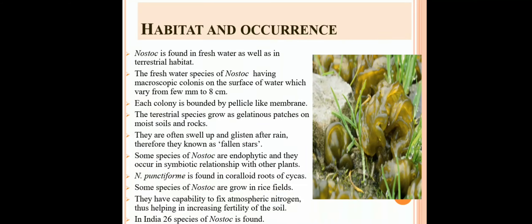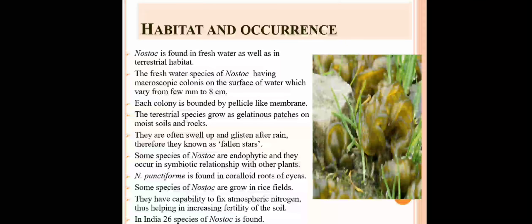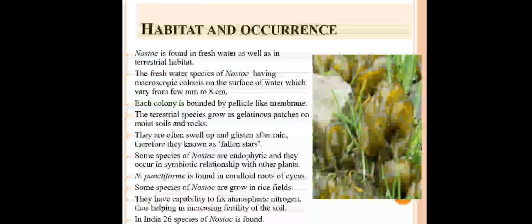Habitat and occurrence: Nostoc is found in freshwater as well as terrestrial habitats such as moist soil or rock. Freshwater species of Nostoc have microscopic colonies on the surface of water, ranging in size from a few millimeters to eight centimeters. Each colony is bounded by a pellicle-like membrane — pellicle meaning a thin layer.